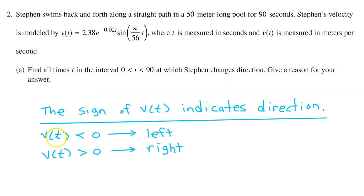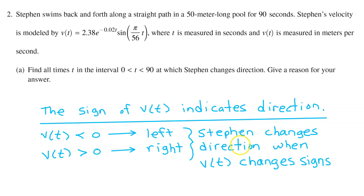The sign of velocity tells you the direction. For example, if v of t is negative, Stephen is swimming to the left. If v of t is positive, Stephen is swimming to the right. So Stephen changes direction when velocity changes signs. This is a calculator active problem, so our strategy will be to graph the velocity function on the calculator on the interval from 0 to 90 and see where it changes signs.